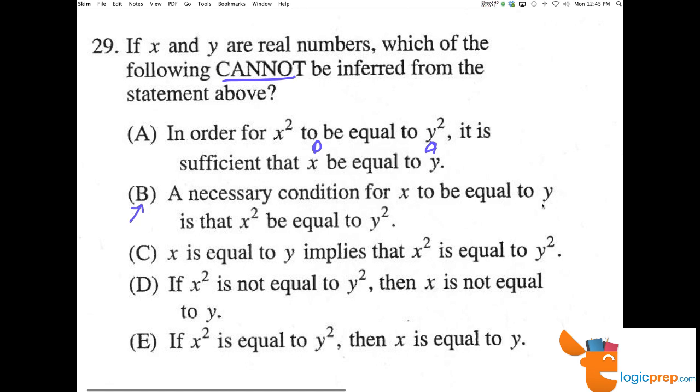A necessary condition for x to be equal to y is that x squared be equal to y squared. That's actually true. It is a necessary condition for x to be equal to y, that when we square them, they equal each other.